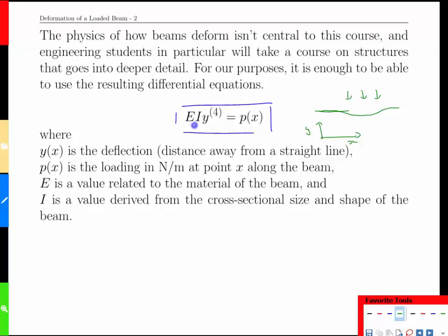The other two terms here, E and I, are material properties for the E, Young's modulus of elasticity of whatever the beam is made of, and I is the moment of inertia or something to do with the cross-section of the beam, if we looked at it end on.